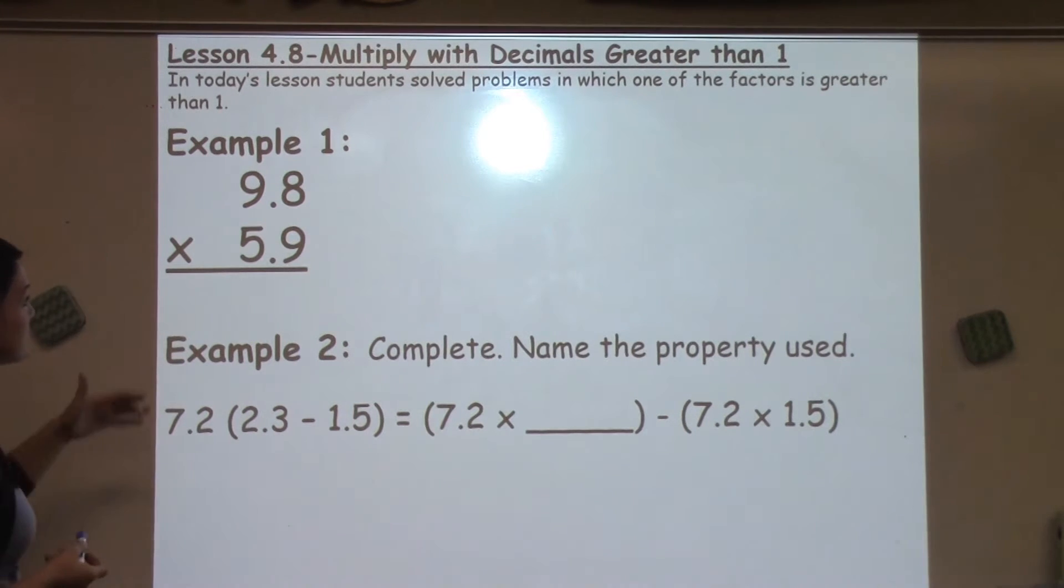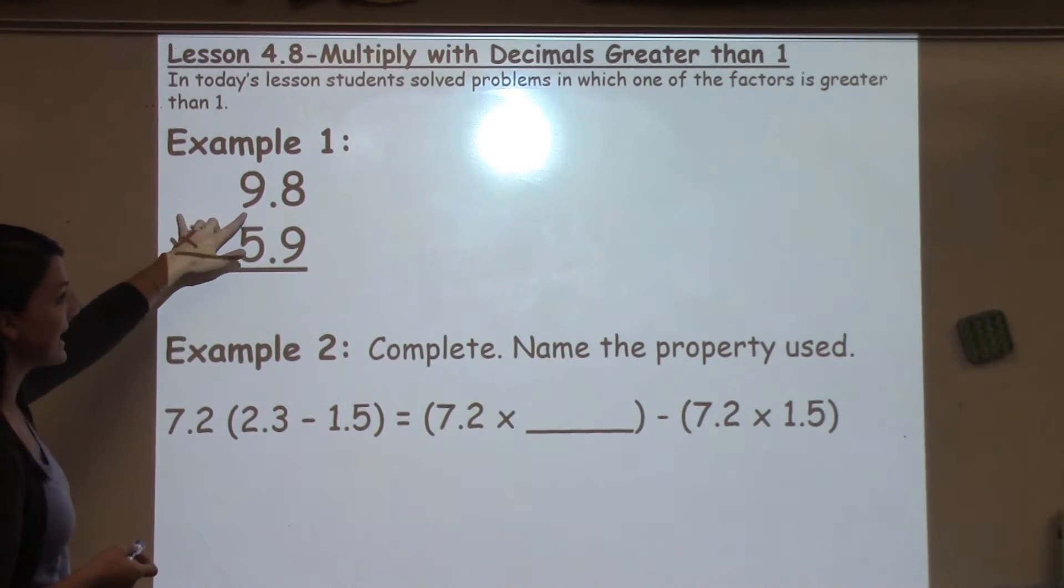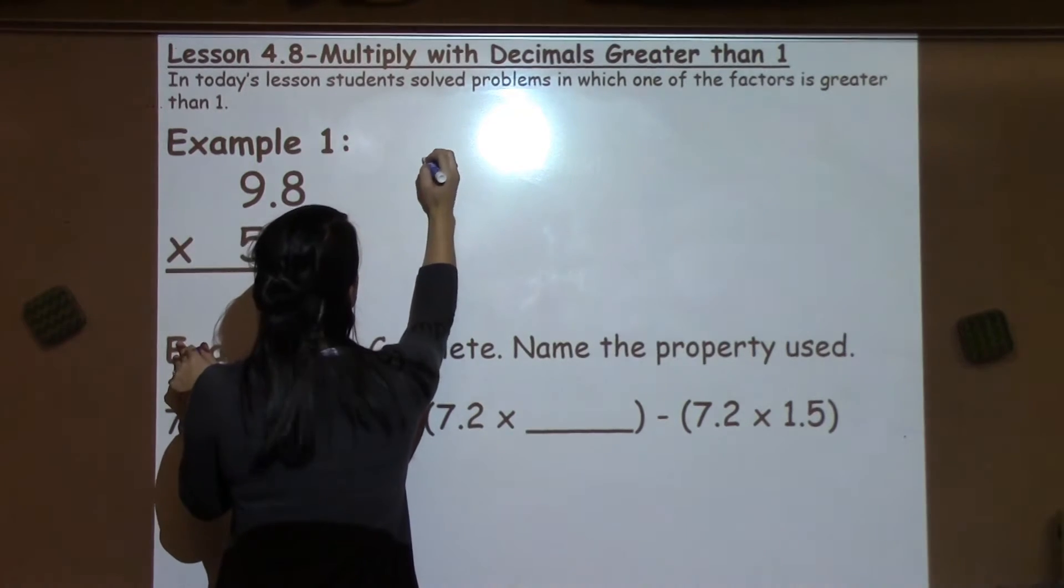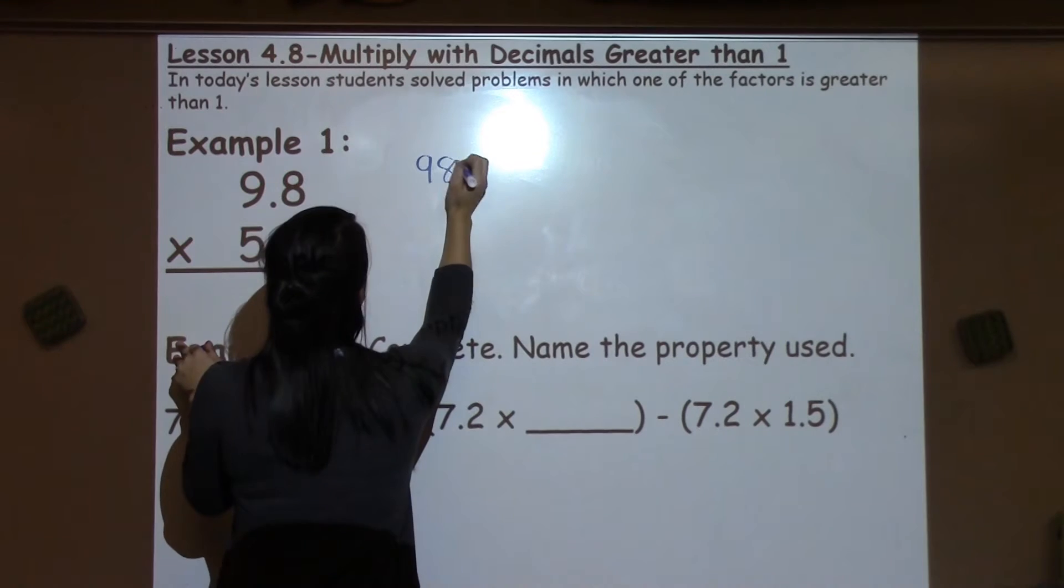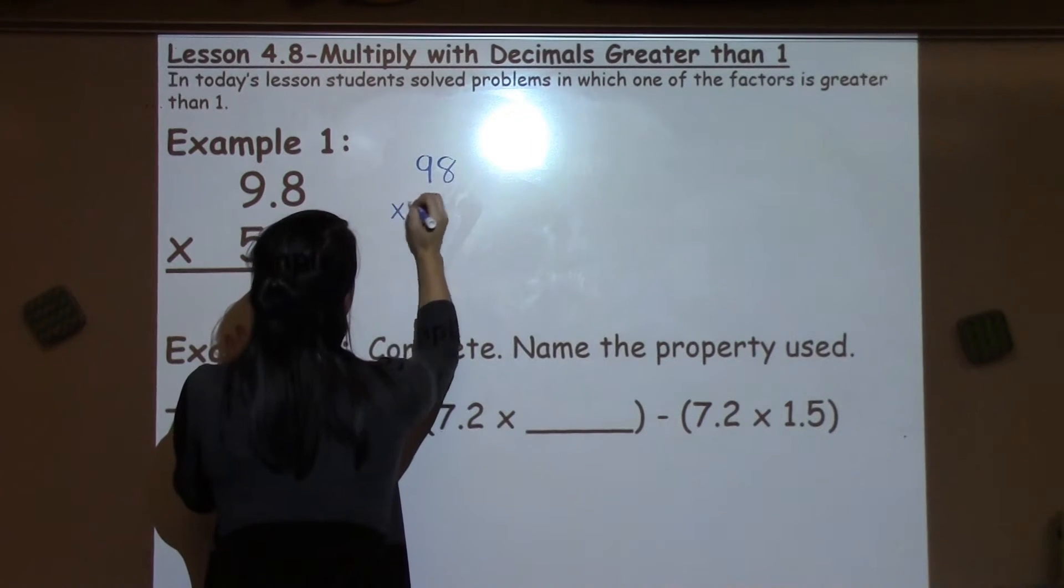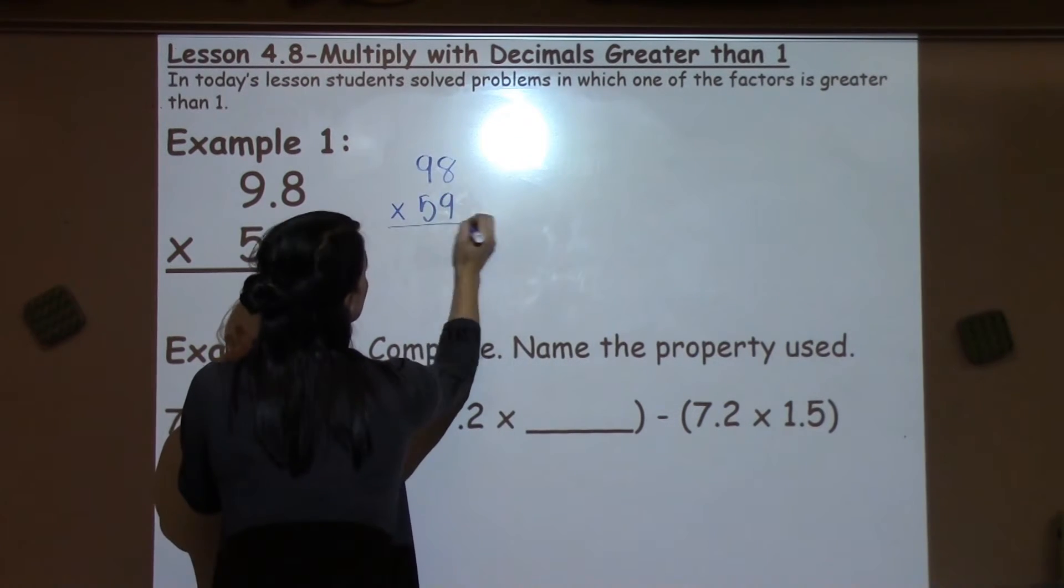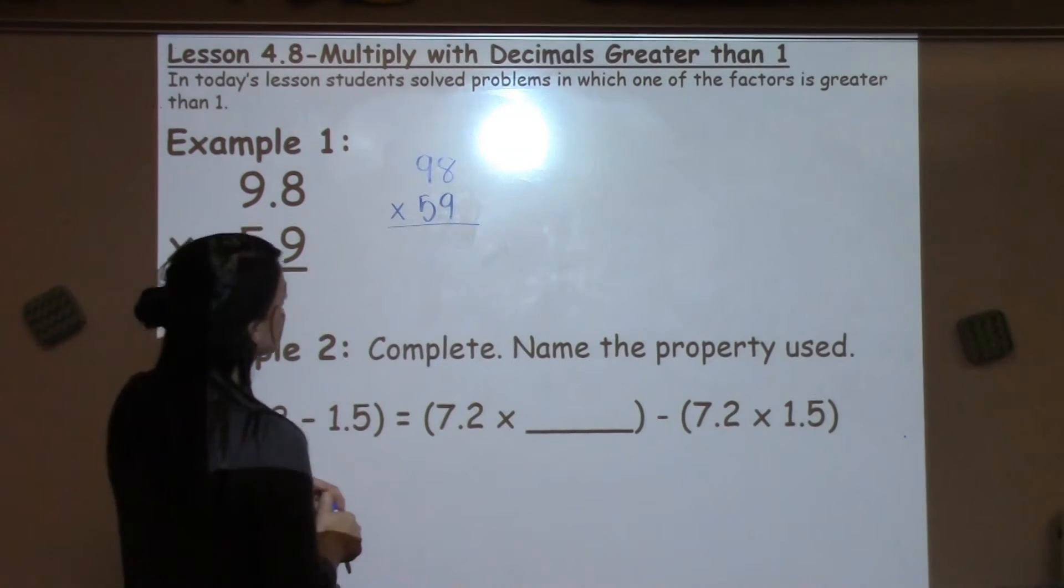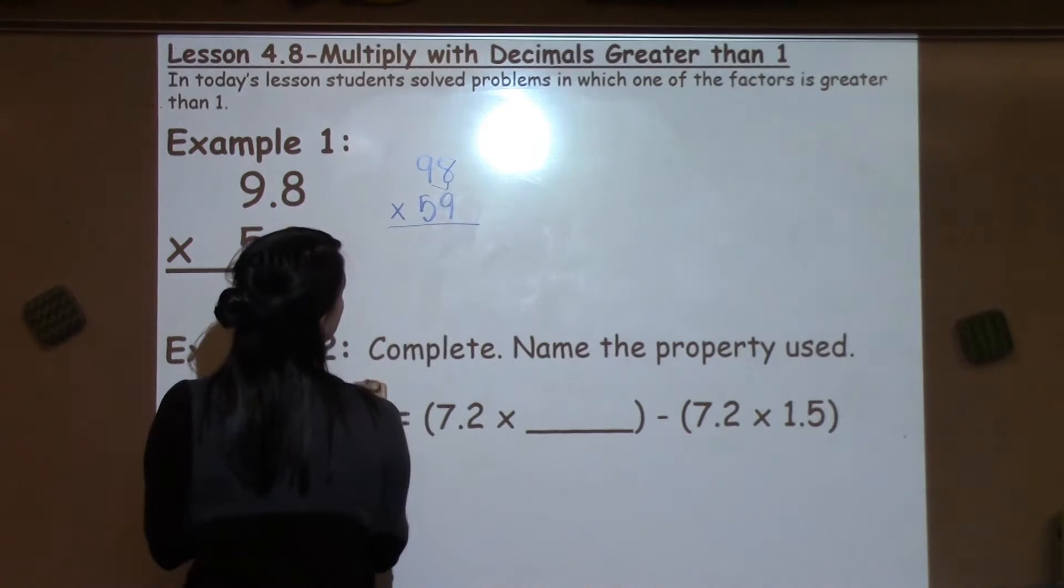The first example is just a regular multiplication problem. It says 9.8 times 5.9. The strategy that I use to help students when they're multiplying with decimals is just to take the decimal out when they're multiplying, and then we'll of course put it back in to make our answer. I'm just going to multiply like I normally would.